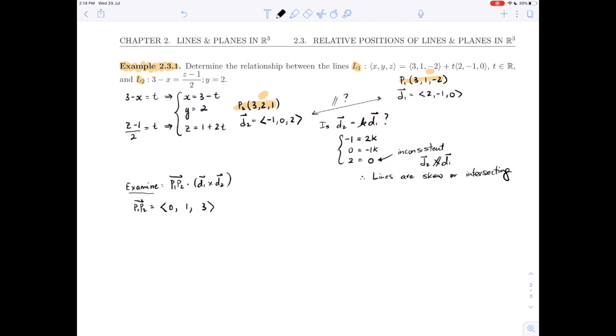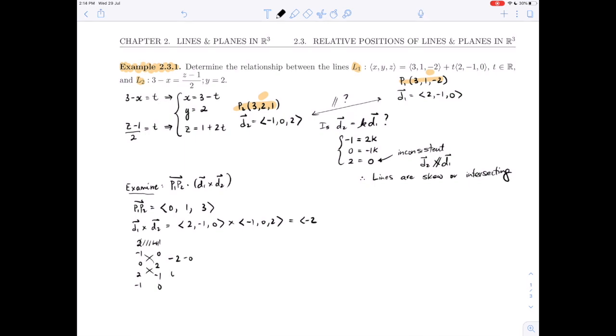And then we're going to calculate d1 crossed with d2. So 2 minus 1, 0 crossed with minus 1, 0, 2. So we'll recopy 2 minus 1, 0, 2, minus 1, 0, 2, minus 1, 0, bar off the first. And what are we getting here? So minus 2 minus 0. That's going to give me just minus 2, 0 minus 4, and 0 minus 1.